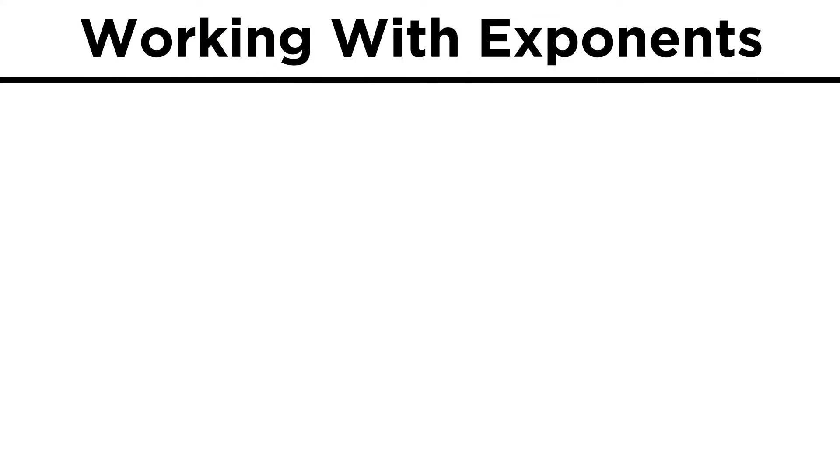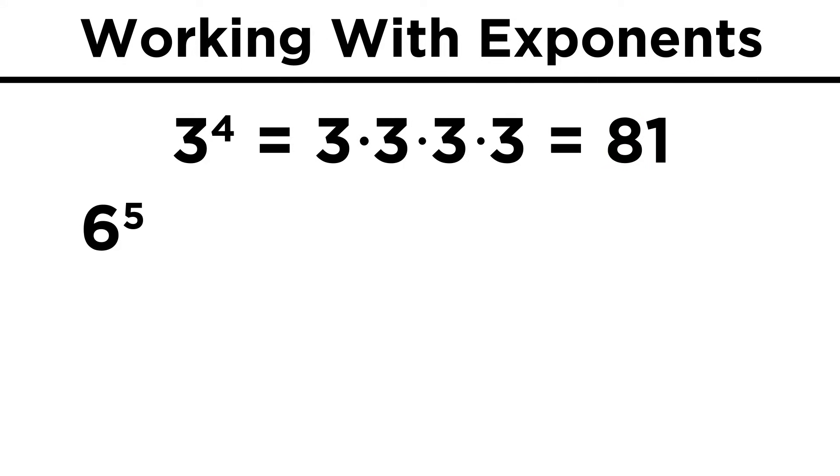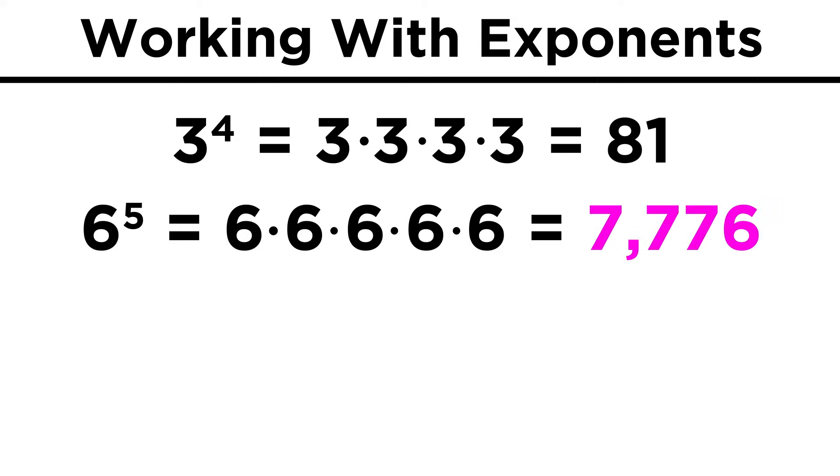Let's try a few examples to practice. What is three to the fourth power? That would be three times three times three times three, or eighty-one. What about six to the fifth power? Well that will give us five sixes to multiply, which equals seven thousand seven hundred and seventy-six.